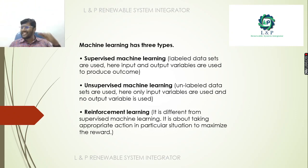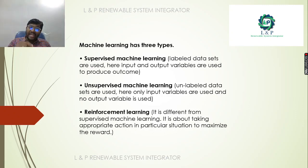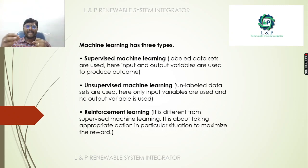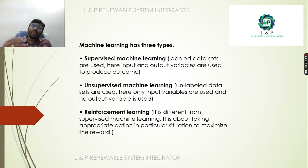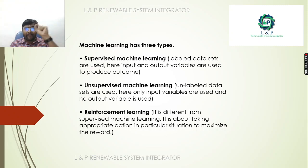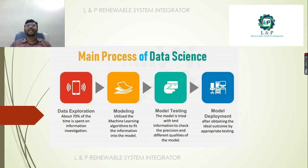There are three types of machine learning. First is supervised machine learning, where labeled datasets are used with both input and output variables. Second is unsupervised learning, where unlabeled data is used as input variables with no output variables. Third is reinforcement learning, which is different from supervised learning — it is about taking the appropriate action in a particular situation to maximize the reward.